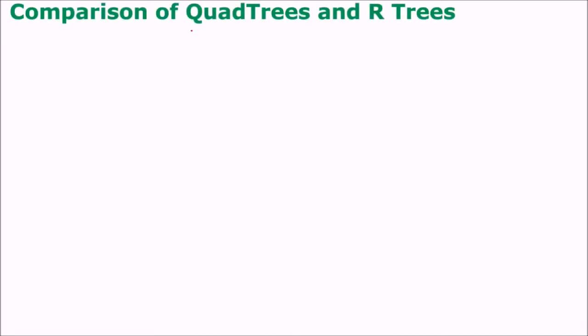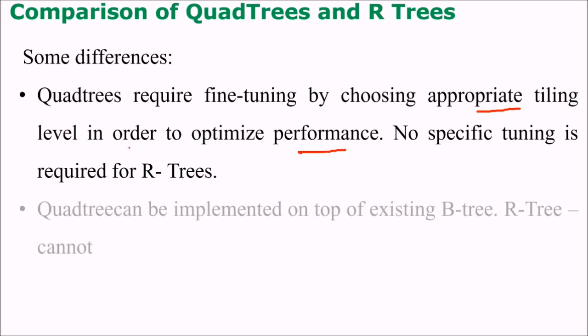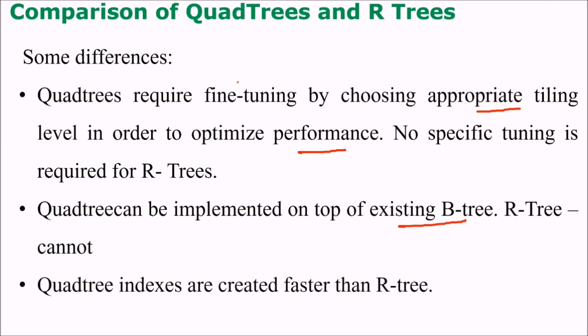When we compare quadtrees with R-trees, there are certain differences. Quadtree requires fine-tuning by choosing appropriate tiling level in order to optimize performance, and no specific tuning is required for R-trees. Quadtree can be implemented on top of existing B-tree. R-tree cannot.